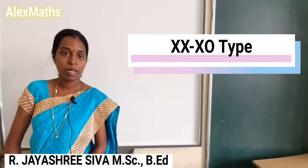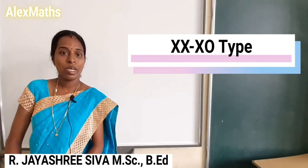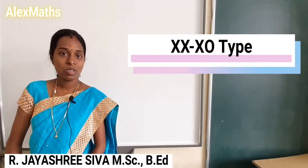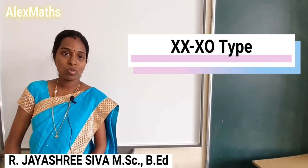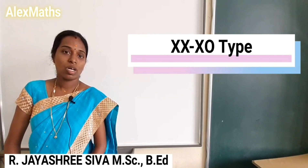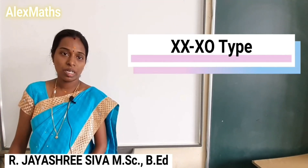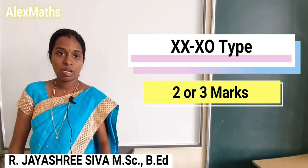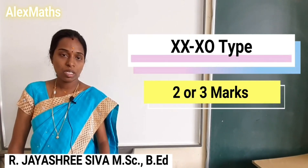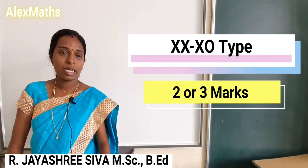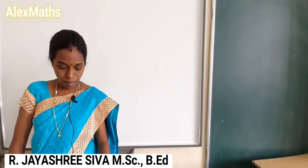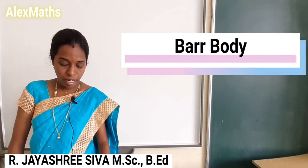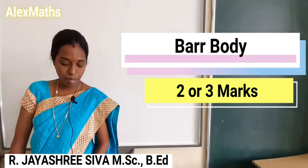XXX is considered female, and XY is male. XX is female, but when the other chromosome is zero (XO), it means there is a genetic defect. This is worth 2 or 3 marks. The question covers the XXX0 type and also the Bar body — what is Bar body? That is a 2-mark or 3-mark question.